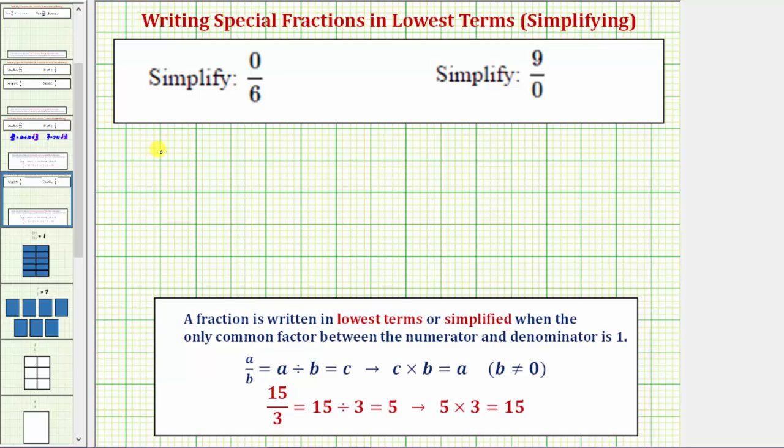So our first fraction is zero sixths, which is equal to zero divided by six. And zero divided by six is equal to zero, and therefore the given fraction simplifies to zero.